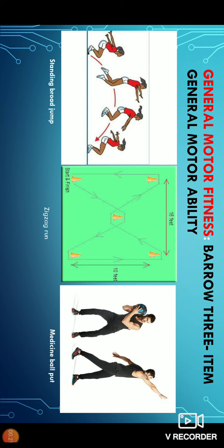In the previous classes we discussed motor fitness test, 50 meter dash, 600 meter run and walk, partial curl up, standing broad jump, push-up for boys, modified push-up for girls, and 4 into 10 meter shuttle run. In this class we'll see Barrow three items general motor ability.